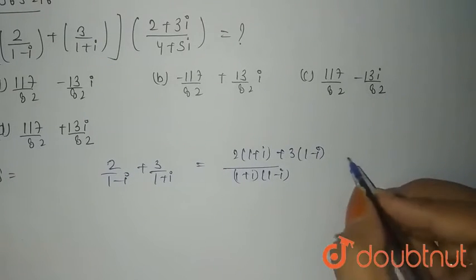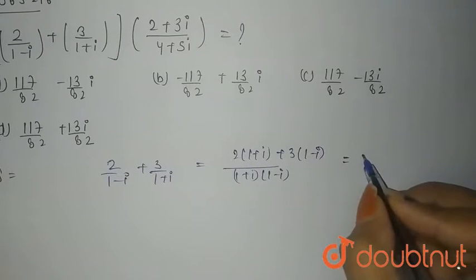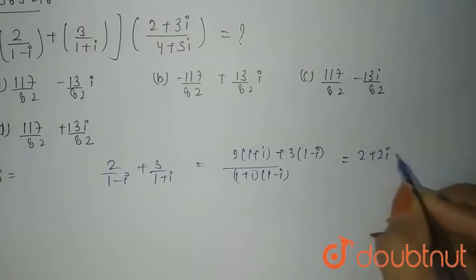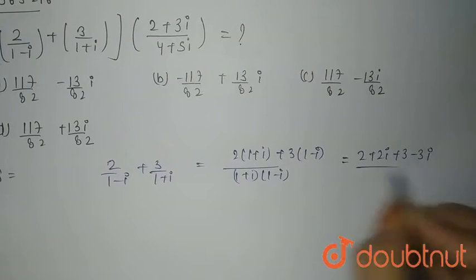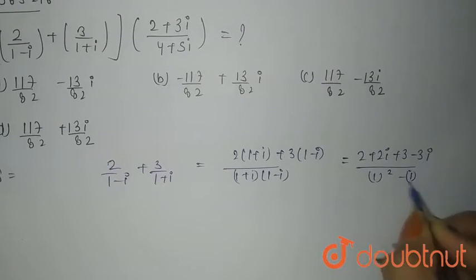Now multiplying it, you will have 2 plus 2 iota plus 3 minus 3 iota divided by 1 the whole square minus iota the whole square.